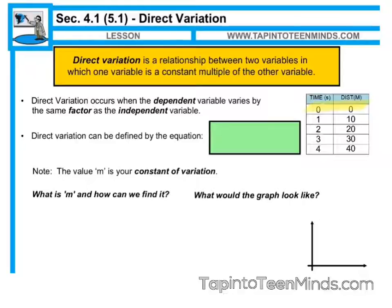Some would say that direct variation means that the two variables are proportional to each other. A direct variation can be defined by the equation y equals m times x. y would be our dependent variable, and x is our independent variable.